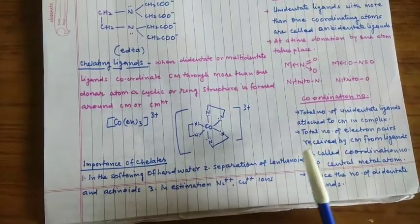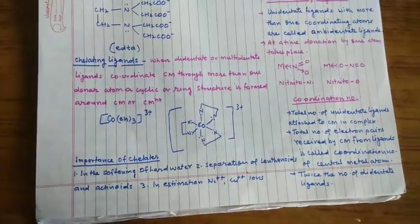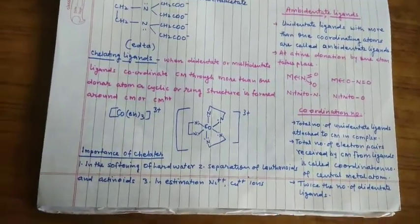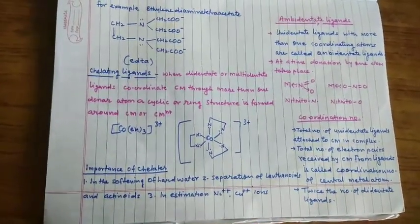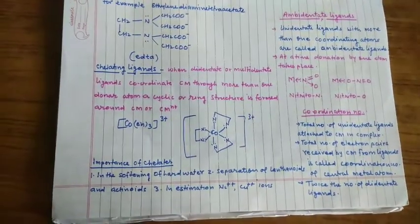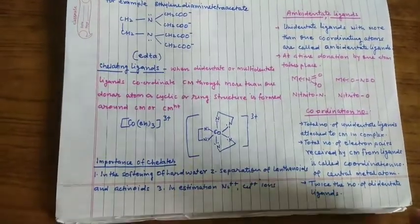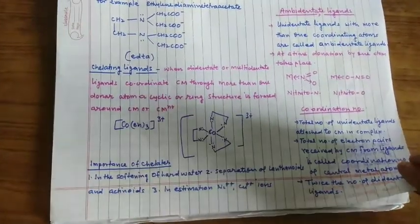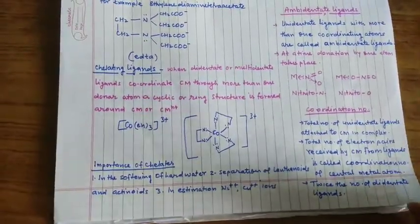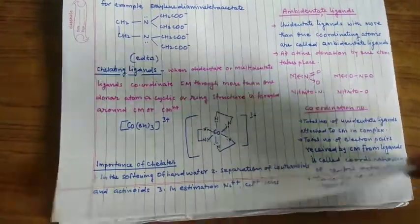Or सबसे easy तरीका है कि हम ये जानें कि how many electron pairs are donated to the central metal atom in the complex। तो जितने pair donate हो रहा है उसका coordination number ये है। तो इस तरह से हम जान सकते हैं कि किसी भी complex में जो CM है central metal atom है उसका coordination number क्या है।